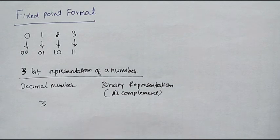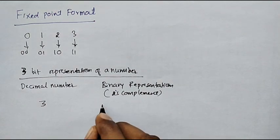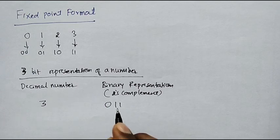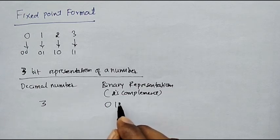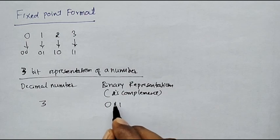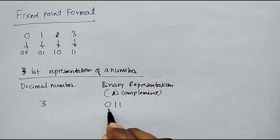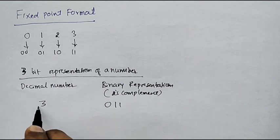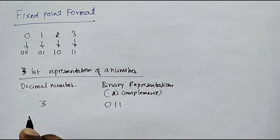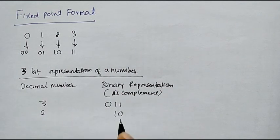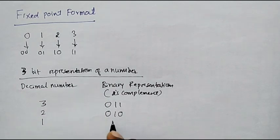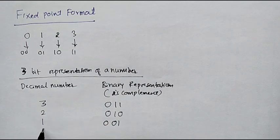Decimal 3 can be represented in 3-bit binary as 011. We can represent 3 using 2 bits as 11; along with one more bit for the sign, since the number is positive, we write 0, giving 011. Similarly, 2 can be represented as 10; since it is positive, we write 010. 1 can be represented as 01; since it is positive, we write 001. And 0 can be represented as 000.